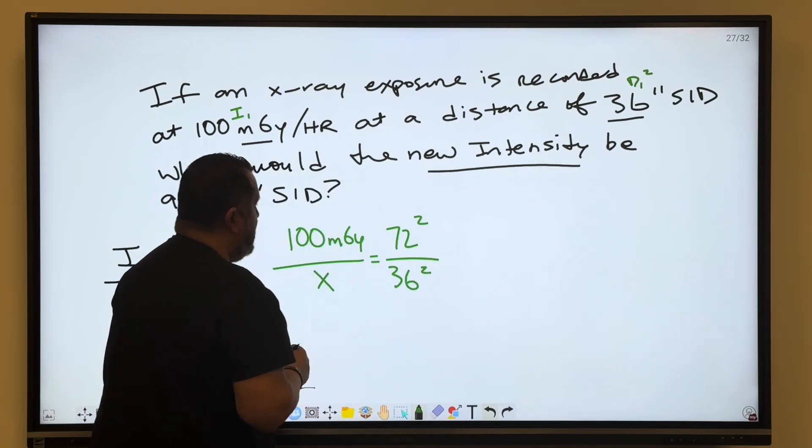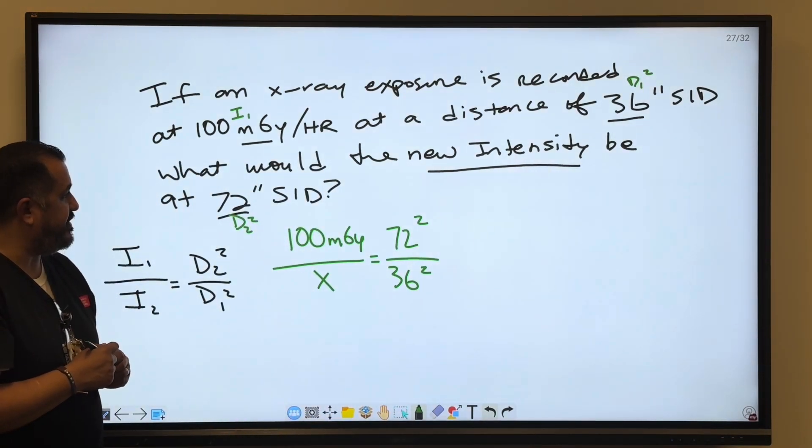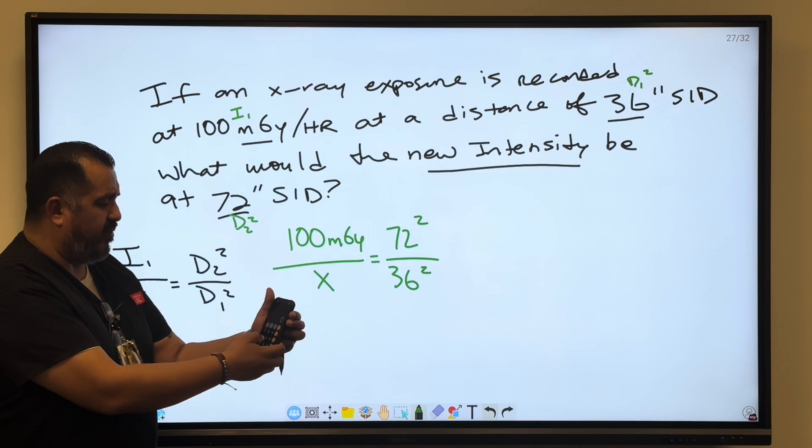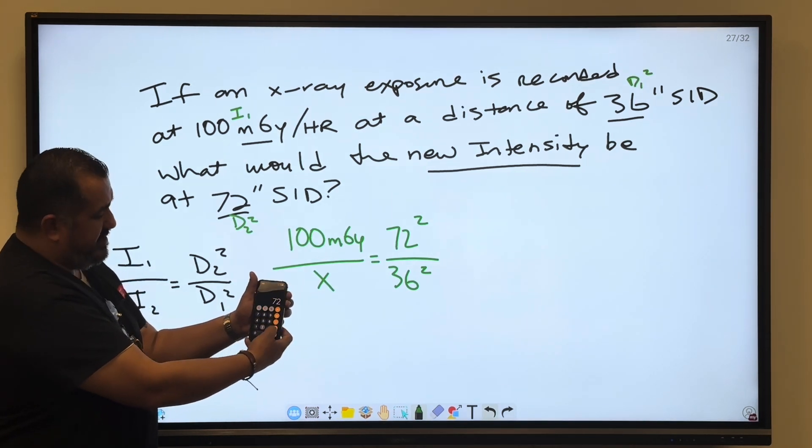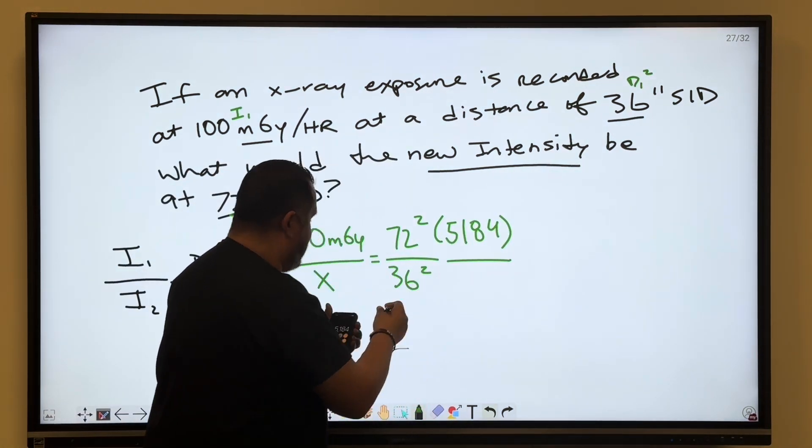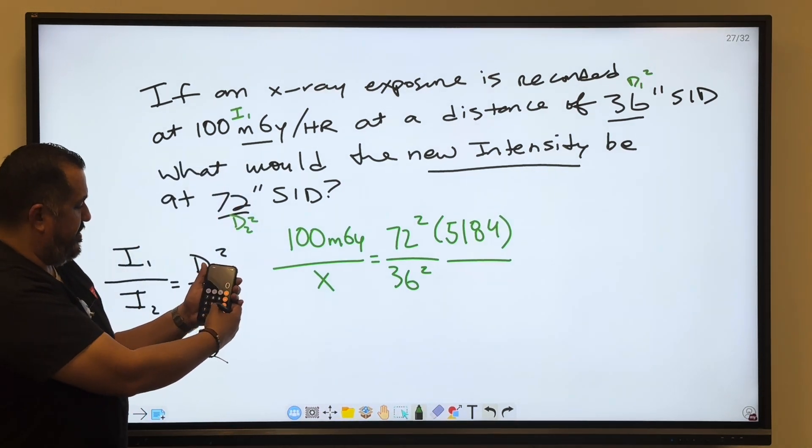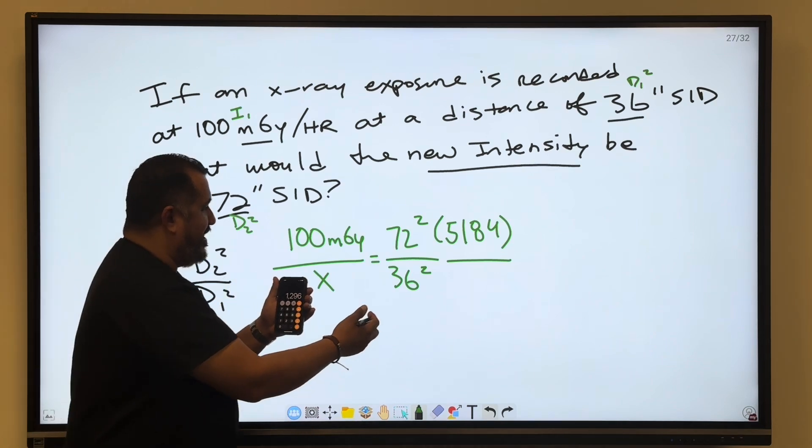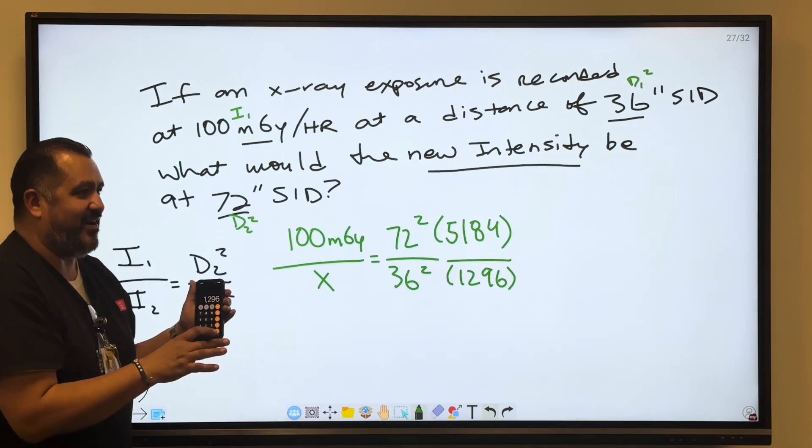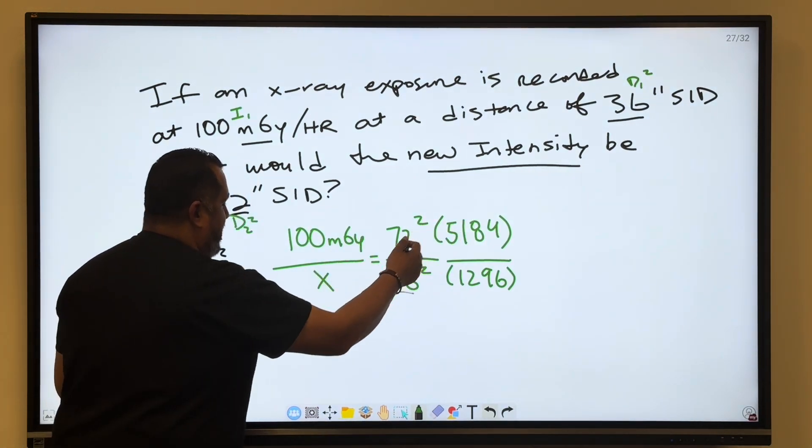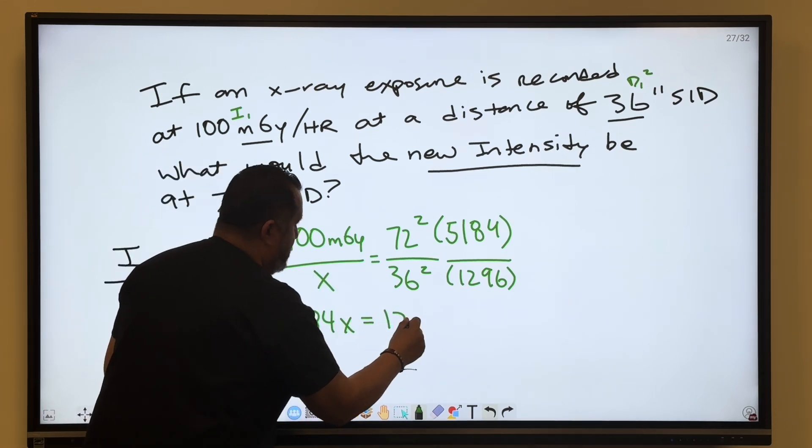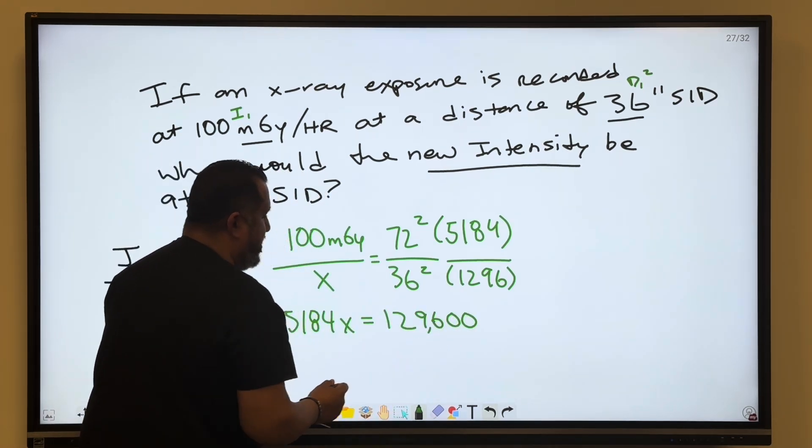So 72 times 72, if you guys multiply, should be 5184. And then we got 36 times 36, should be 1296. Now we're going to cross-multiply. We got 5184X and now we got 1296 times 100. So we're going to add two zeros, so we got 129,600.